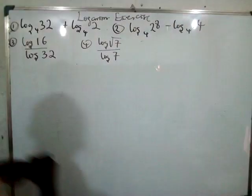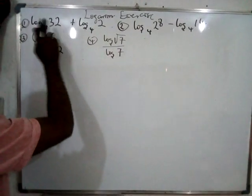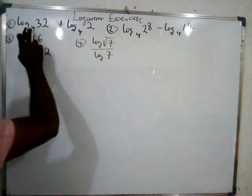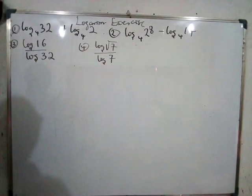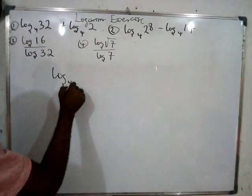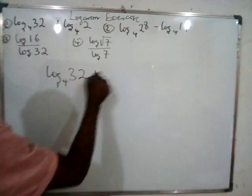Given this problem: log₄32 + log₄2. We are going to use the addition law. The addition law says that once we have numbers to the same base and we are adding numbers to the same base, what do we do?